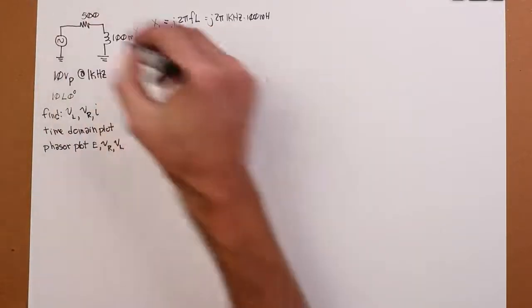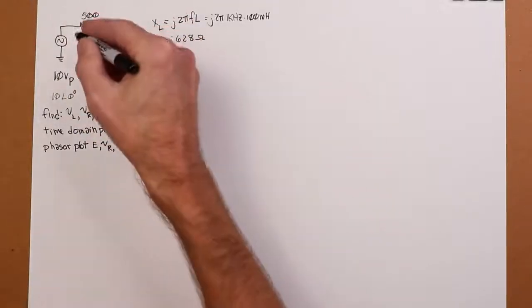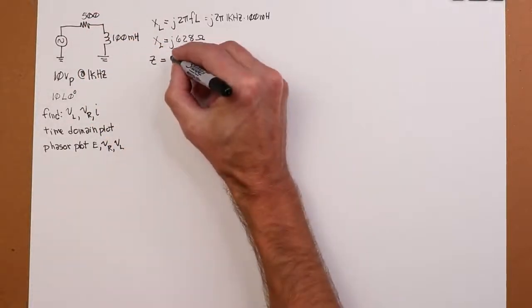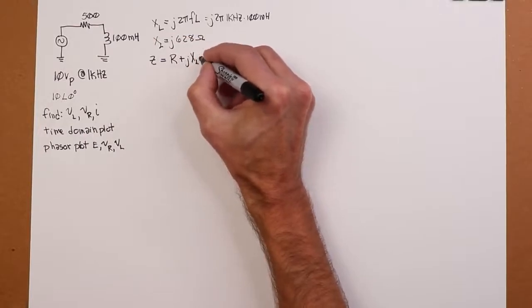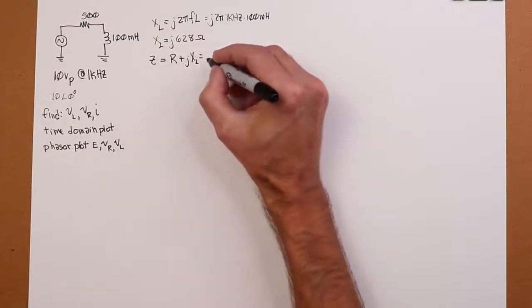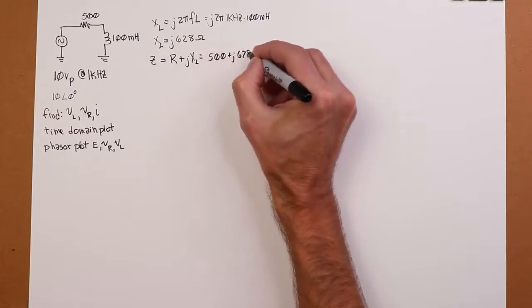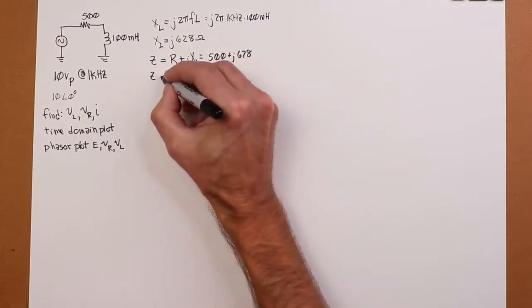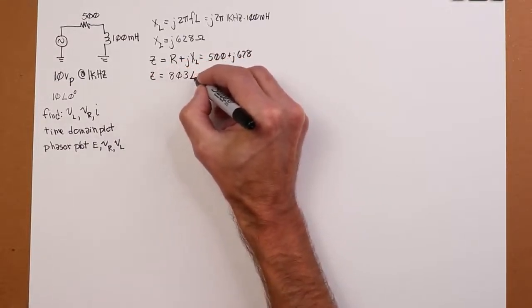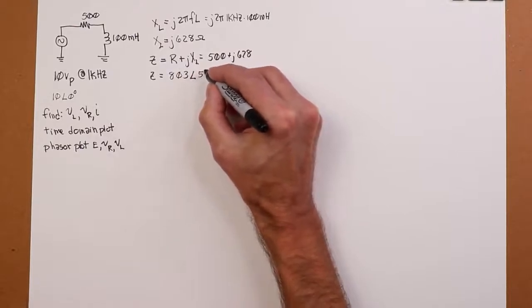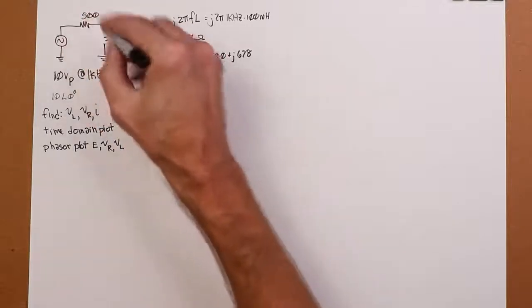Now, the impedance of this system, Z, is the reals plus the imaginaries. We just have the one real, in other words R, and the one imaginary, JXL. So that's going to be 500 plus J628. And if we put that in polar form, that would be 803 at an angle of 51.5 degrees. So how do we go about finding these?